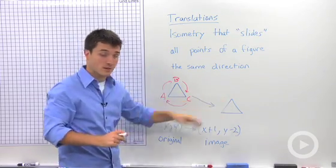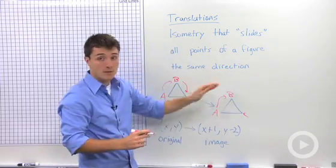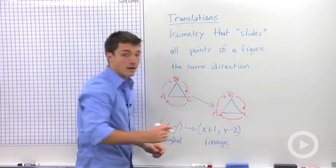When I translate this, that orientation is going to stay the same. We're still going to have A then B, B then C, and C then A.